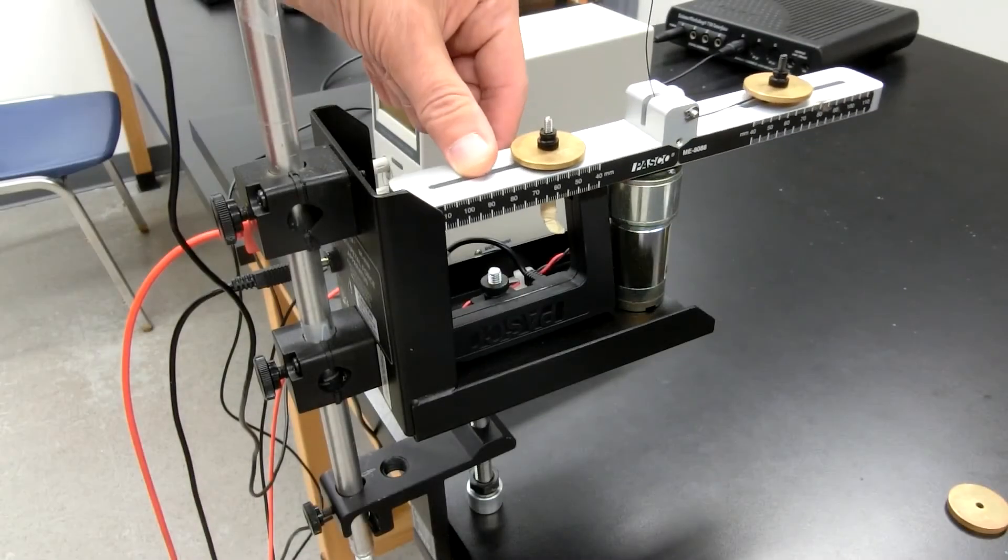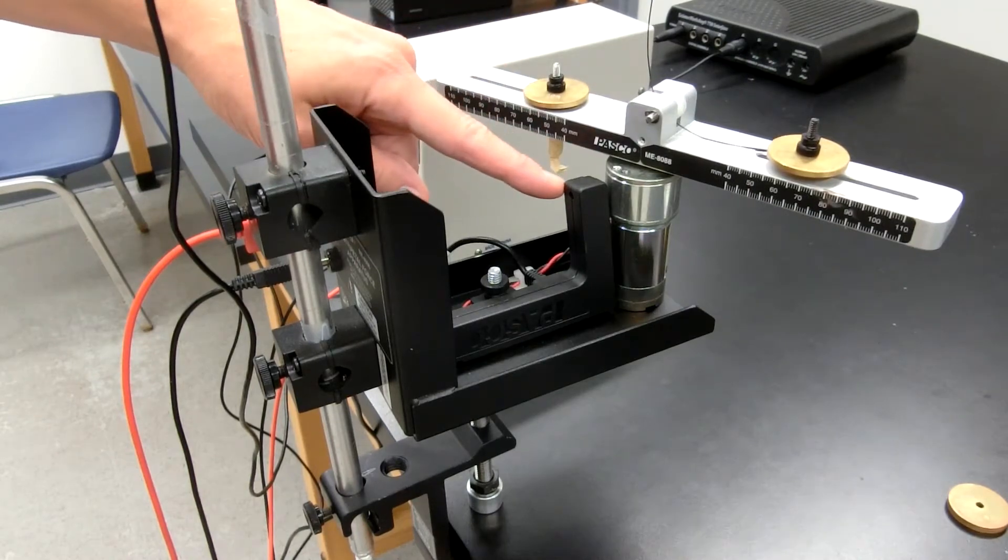The spinning arm passes through a photogate, which allows a computer to measure the number of revolutions per second.